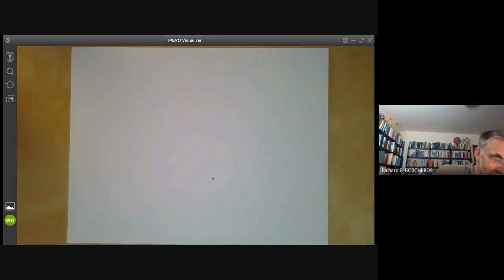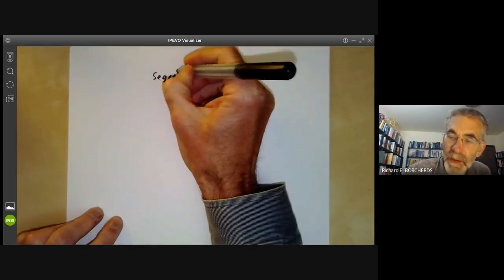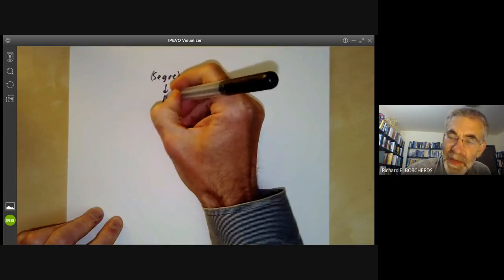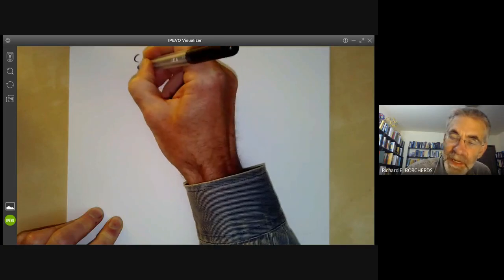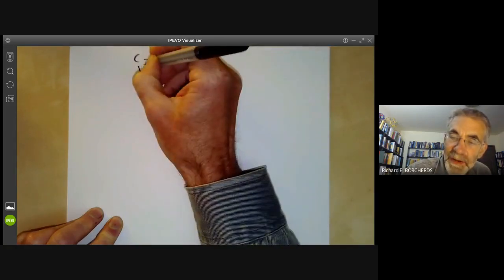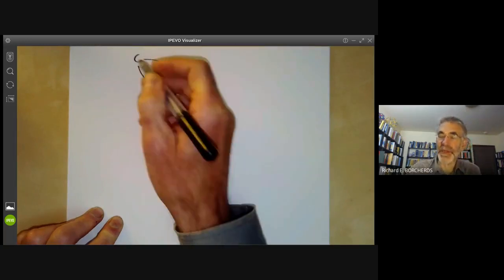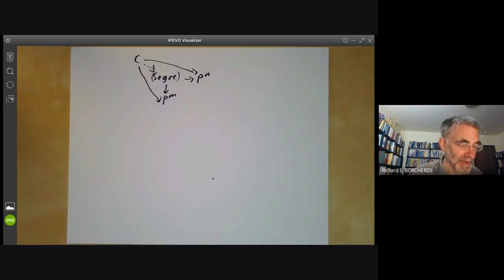The other thing we need to check is that we have the universal property. So here we've got the Segre variety mapping to P,M and to P,N. And suppose we've got any other variety, C, with maps to P,M and P,N. Then we've got to show that there's a unique map from C to this Segre variety.